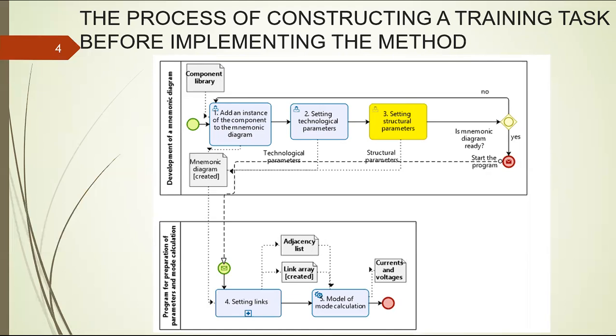Two are performed programmatically. At stage number three, setting structural parameters, the developer initially manually enters the structural parameters, such as number of copies of components and branch indices.